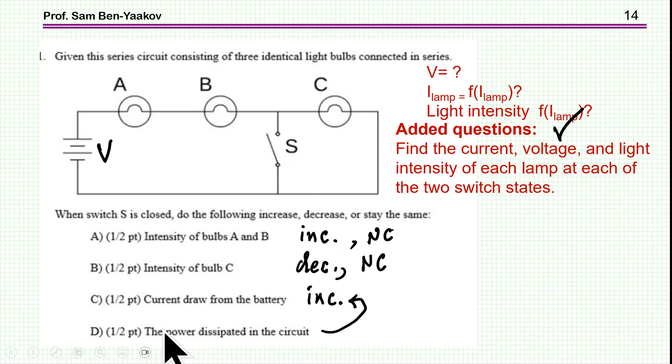The only question you can answer is, with the current drawn from the battery going up or down, obviously, with the three lamps, there'll be less current. And when it is switched, the current will be higher.